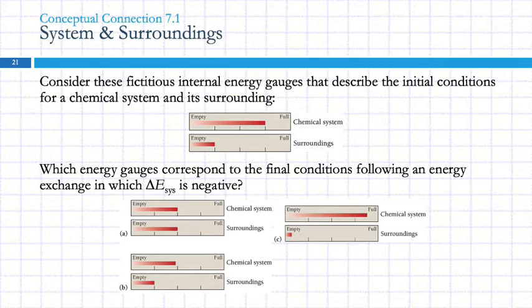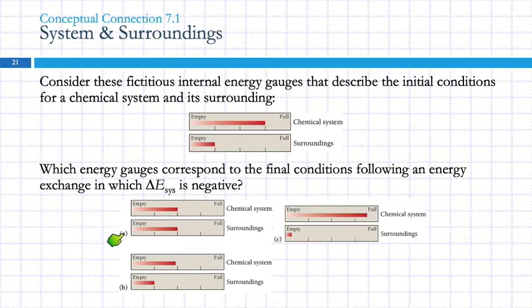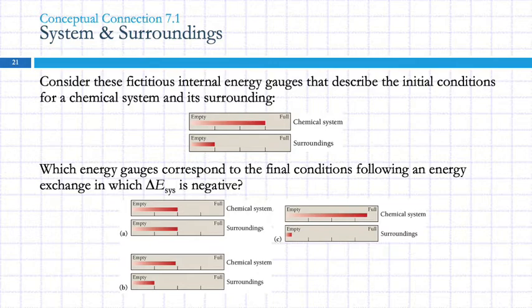Consider these fictional internal energy gauges that describe the initial conditions for a chemical system and its surroundings. We're starting with the chemical system at three-quarters of a tank and the surroundings at one-quarter of a tank. We have three options — A, B, and C — and the question asks which energy gauges correspond to the final conditions following an energy change in which delta E for the system is negative. If the system experiences a negative transaction, it's losing energy, just like losing money.